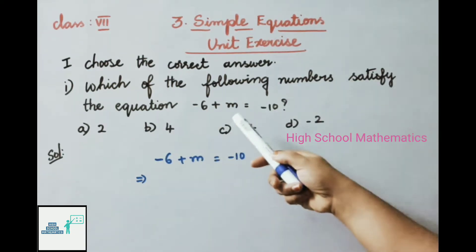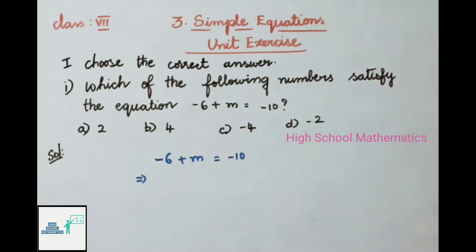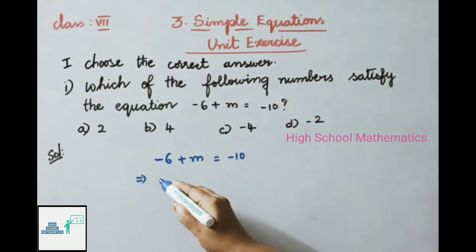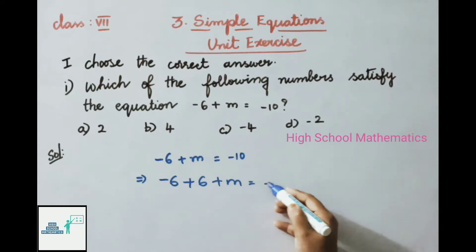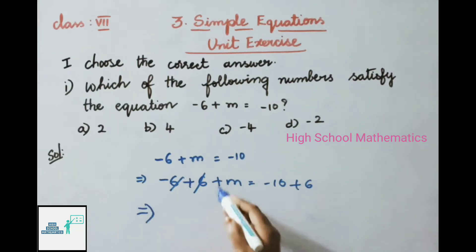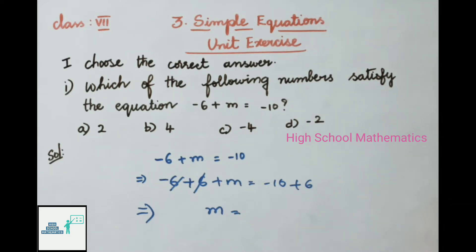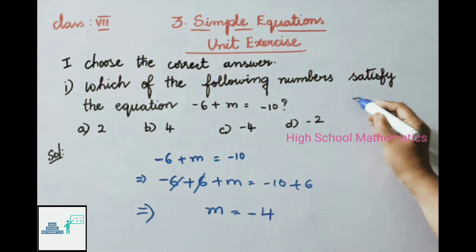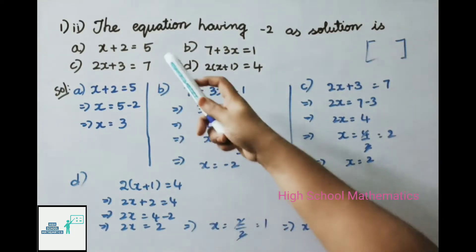First question: which of the following numbers satisfies the equation -6 + m = -10? Given equation: -6 + m = -10. Adding 6 on both sides: -6 + 6 + m = -10 + 6. The -6 + 6 cancels, so m = -10 + 6. Since opposite signs, we subtract: 10 - 6 = 4, so m = -4. The answer is option C, minus 4.